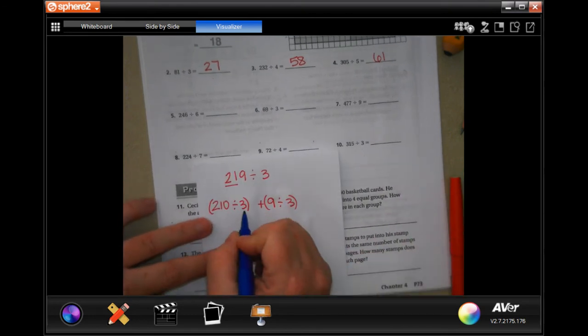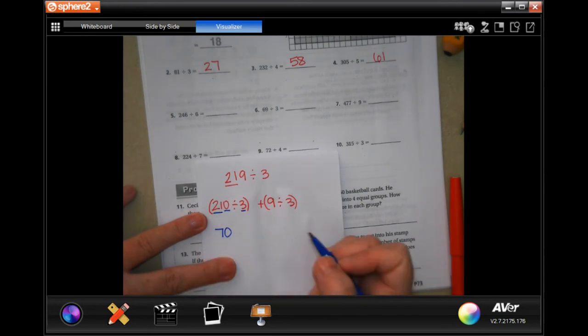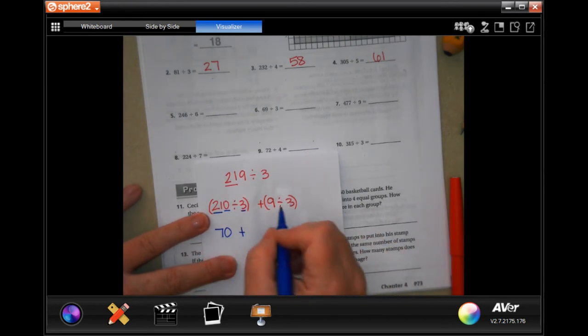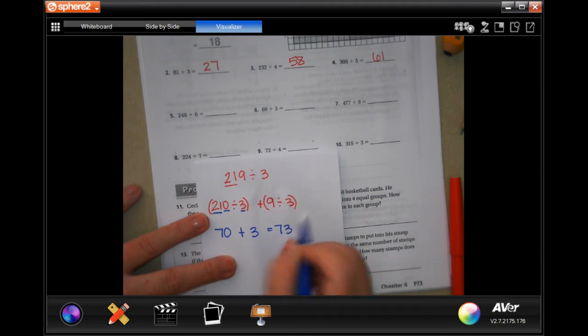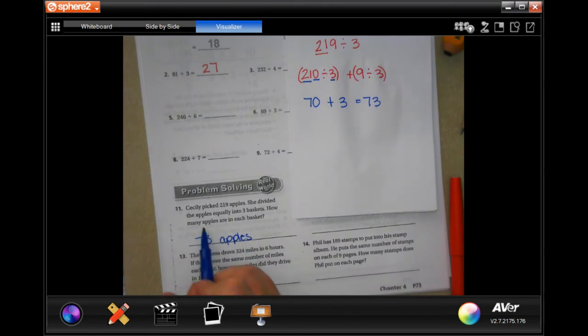So three goes into 21, seven times, tack that zero on, and then three goes into nine, three times, 73 apples. This is how many apples, make sure that you're using your labels.